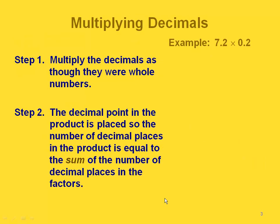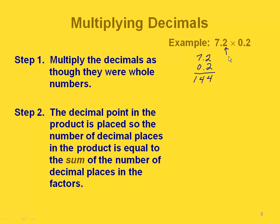When we multiply decimals, we start out just multiplying them as though they were whole numbers, ignoring the decimal points for right now. So 2 times 2 is 4, and 7 times 2 is 14. We don't have to do anything with the 0 because 0 times anything is 0. So our initial product here looks like 144.